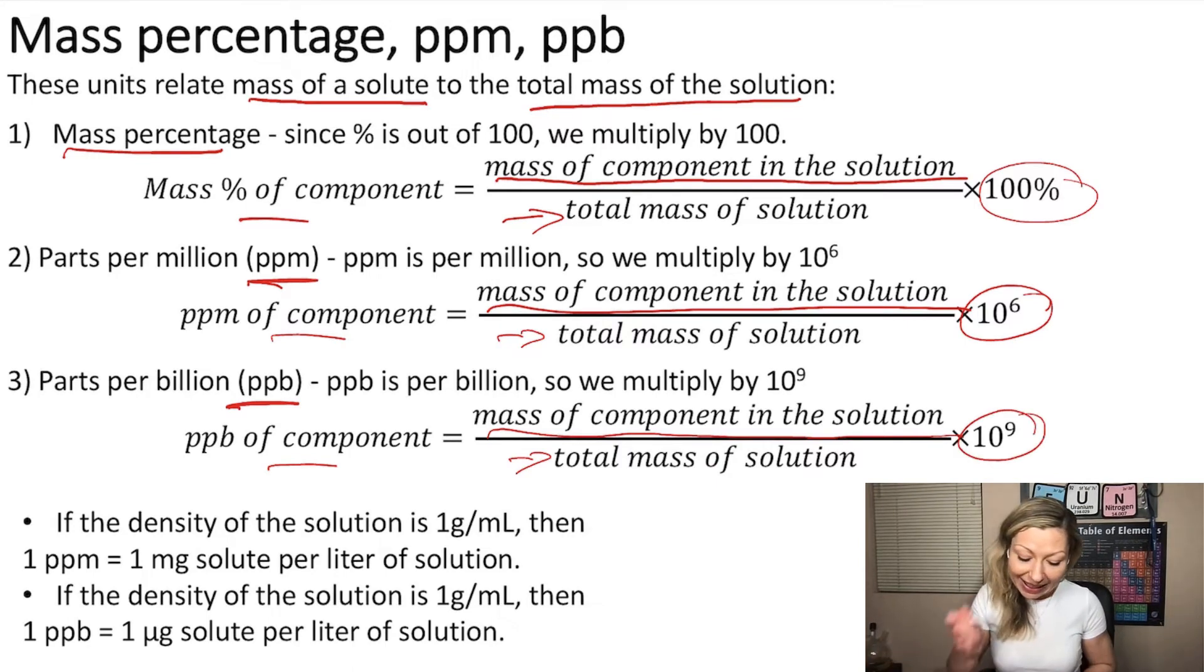And if the density of the solution is one gram over one milliliter, then one parts per million will give us one milligram solute per liter of solution. And if the density is again one gram per milliliter, then one ppb is going to give us one microgram solute per liter of solution.